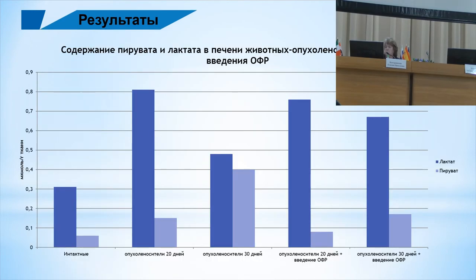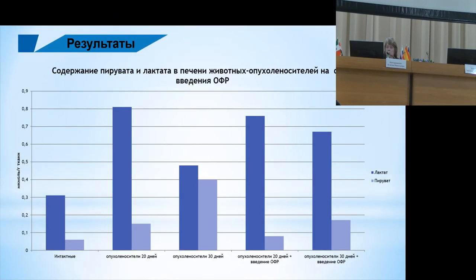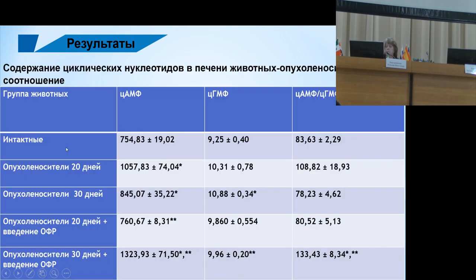The same can be seen in the carbohydrate exchange products. I cannot say that lactate returns to normal because there is a tumor sending lactate into the tissue, which goes to the liver for the gluconeogenesis reaction where glucose is formed from lactate. We do not see a decrease in lactate, but pyruvate does decrease significantly, so the carbohydrate exchange is being restored.